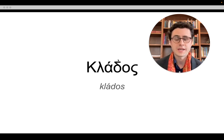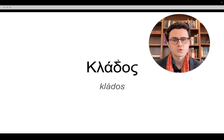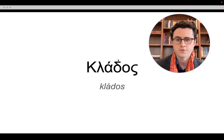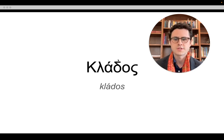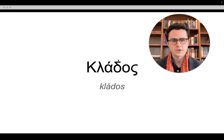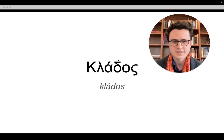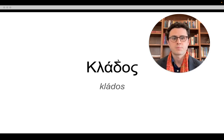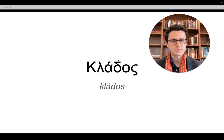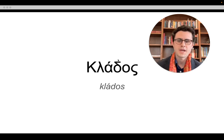In the gospel of Matthew, chapter 24, verse 32, Jesus uses the word klados in reference to the branches of a fig tree. Jesus says, 'From the fig tree, learn its lesson. As soon as its branch becomes tender and puts forth its leaves, you know that summer is near.' So here the branch is a sign of an important time or season — like kairos, which we looked at in the first Greek this week.